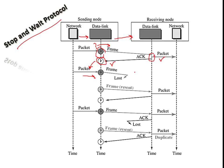In the second case, the frame sent by the sender is lost on the way, so the receiver receives nothing and keeps silence. The timer expires and the copy of the frame is resent. Once the receiver gets the frame it sends the acknowledgement and the process continues. In the third case, after successfully sending the frame, the acknowledgement from the receiver is lost or corrupted. The sender doesn't receive the acknowledgement, assumes there is an error, and resends the data. The duplicate copy is collected by the receiver, and the acknowledgement is sent again.